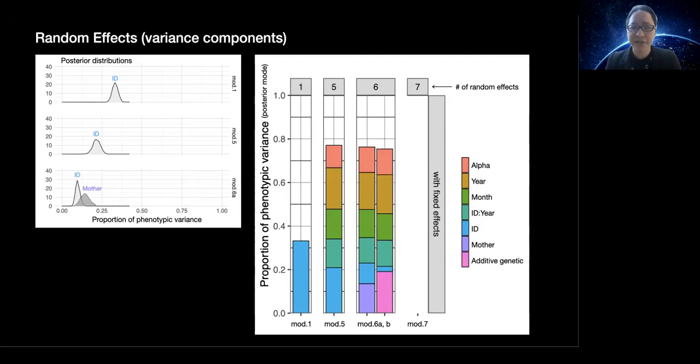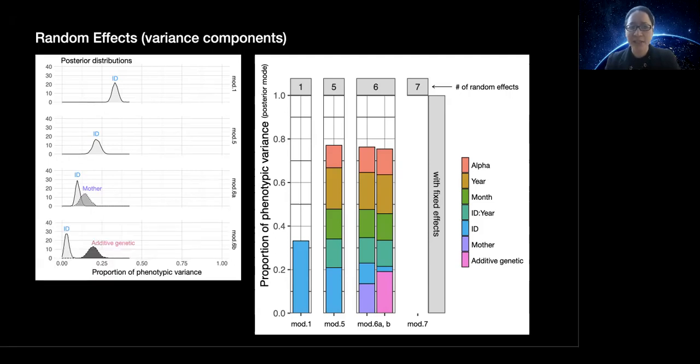Now what about additive genetic effects, or the proportion of phenotypic variance that is due to genetic variation? We can see that repeatability also appears largely explained by additive genetic effects. So we have evidence for both maternal and additive genetic sources of variation. However, it is important to note that, because individuals that share more genes are also more likely to share maternal environments, values for both maternal effects and additive genetic effects can be overestimated.